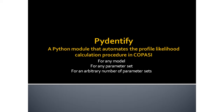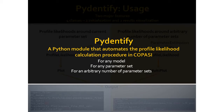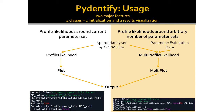But that's where PyDentify comes in. PyDentify is a Python module that automates the process of setting up profile likelihood calculations using COPASI. It can do so for any model that is compatible with COPASI, for any parameter set, and any number of parameter sets. You have two major features: one, you can calculate the profile likelihoods around the parameter set currently in the model; or two, if you have parameter estimation data — whether simulated in COPASI or elsewhere — you can calculate profile likelihoods around any parameter set you like, any number of times.